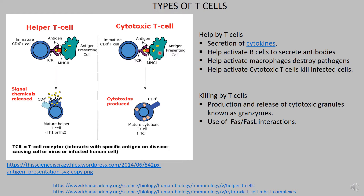It's not only virally infected cells that cytotoxic T-cells can kill — they can kill any cell that's abnormal in some way. Even a cancerous cell presenting antigens that differ from a healthy cell can be killed by a cytotoxic T-cell. Anything atypical, if recognized by a cytotoxic T-cell, can be killed through the release of cytotoxic granules called granzymes. There is also another mechanism involving a receptor and receptor ligand interaction called FAS and FAS ligand, which cytotoxic T-cells can use to kill infected or abnormal cells.